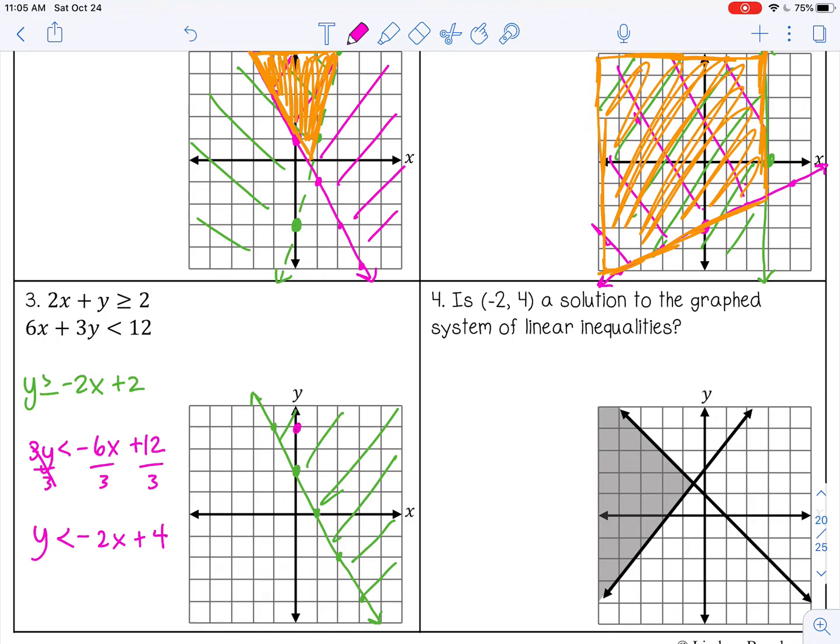So, positive 4, and then down 2 over 1, down 2 over 1, down 2 over 1. This is a dashed line, because it's just less than, not less than or equal to. And I'm going to be shading less than, so below.